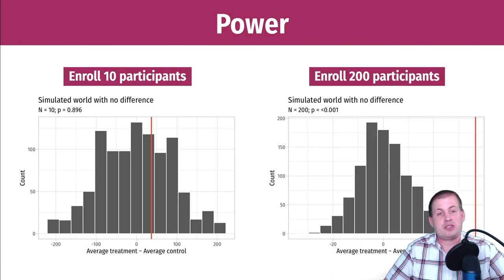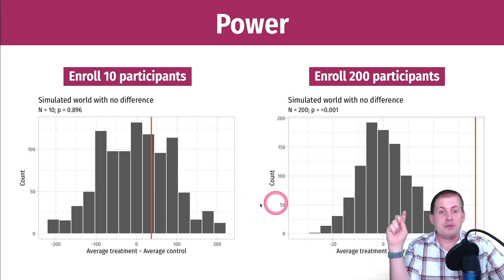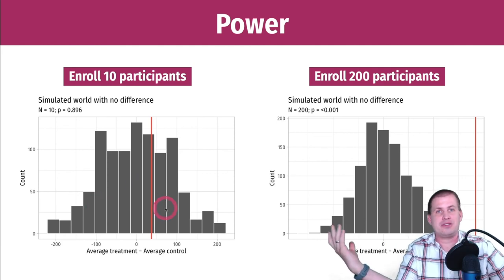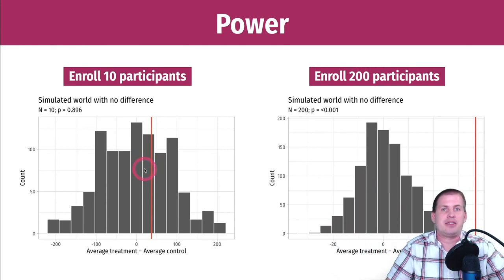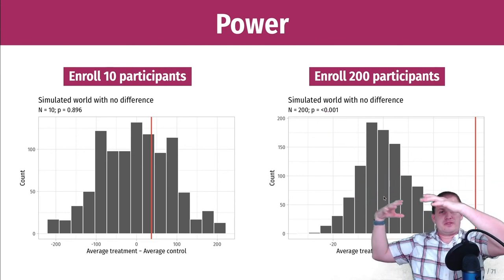If we have a bigger sample size, like 200, we might see a result of $40. But in the world where there's no difference, because we have a lot more people, that null world is a lot smaller — it ranges between negative $20 and $20. So seeing a $40 difference is fairly rare; the probability of seeing that is less than 0.001. Now we can say that's probably an actual effect we can measure in the population. This doesn't mean there's no effect with the small sample — it just means we can't detect it. The null world is too large to recognize the $40 difference.